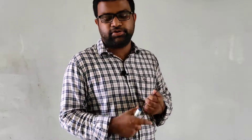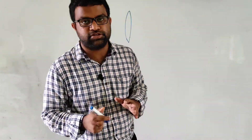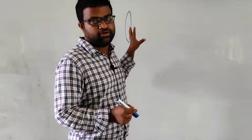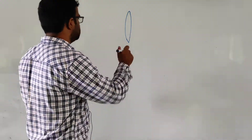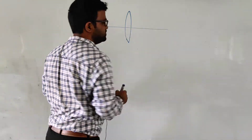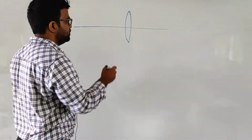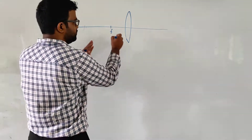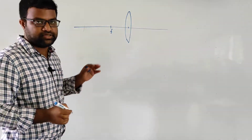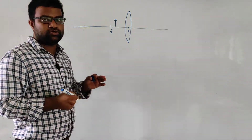Hello everyone. Today in this video I am going to discuss the simple microscope. A simple microscope consists of only a single convex lens. We know that if we keep the object between the focus and the optical center, a virtual enlarged image will be produced.